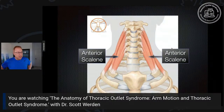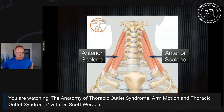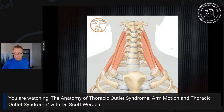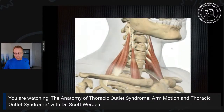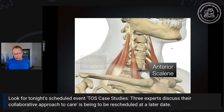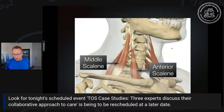Once the nerves leave the cervical spine and the artery and vein leave the chest, they enter the thoracic outlet and pass between a series of muscles. The most important muscle is the anterior scalene muscle. The anterior scalene and middle scalene define the scalene triangle — the anterior scalene in front and the middle scalene in back, with this space between them outlined as the scalene triangle.